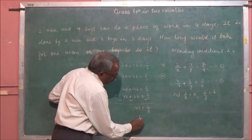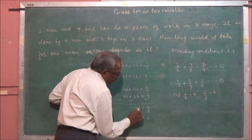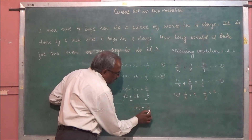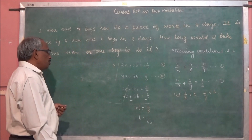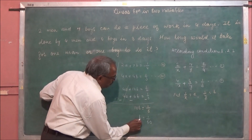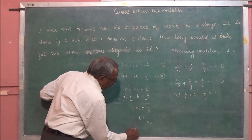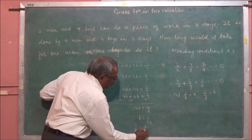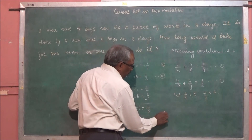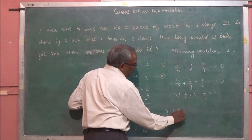Since b = 1/60, and b means 1/y, we have 1/y = 1/60. Therefore y = 60. So one boy can complete the work in 60 days.